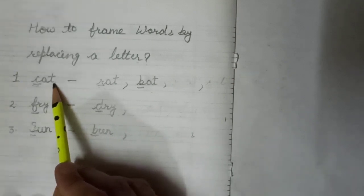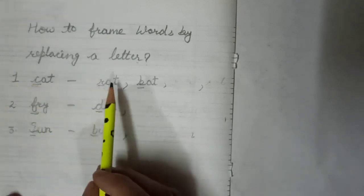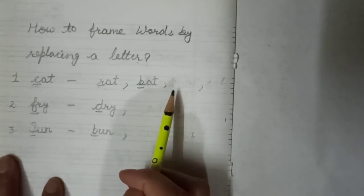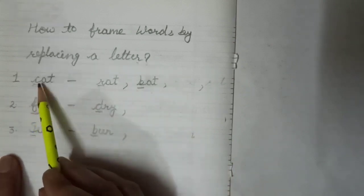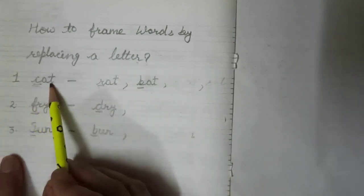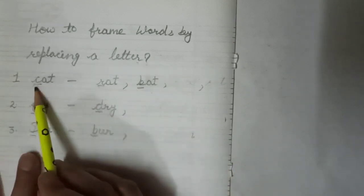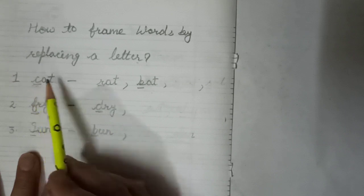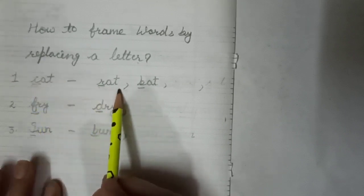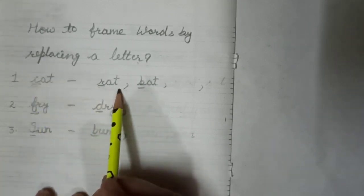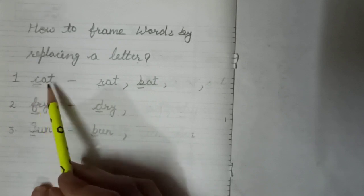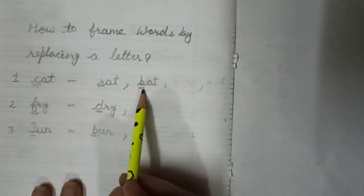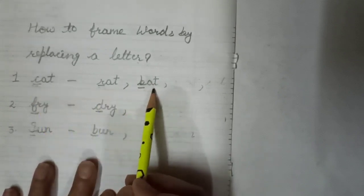When we replace letters, we can make a new word. Like C-A-T is cat. When I replace C with R, it will be rat. When I replace C with B, then it is bat — B, A, T.